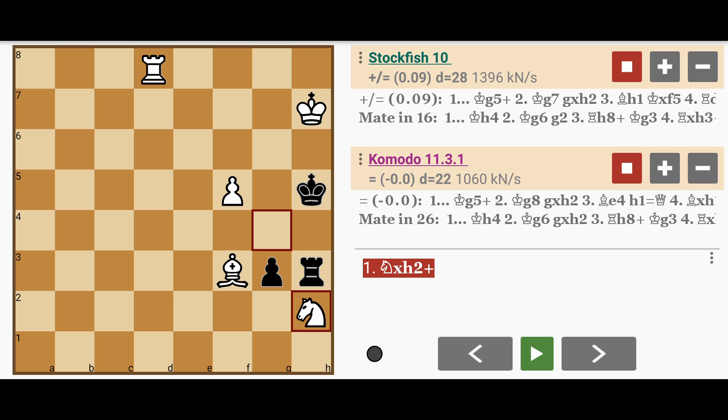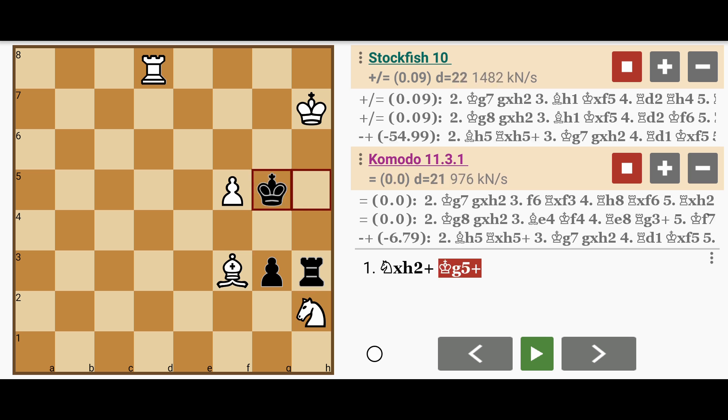Because what will happen here now is black will play king to g5, creating a discovered check on the king, and also an activated fork if you will, the king and the knight on h2.